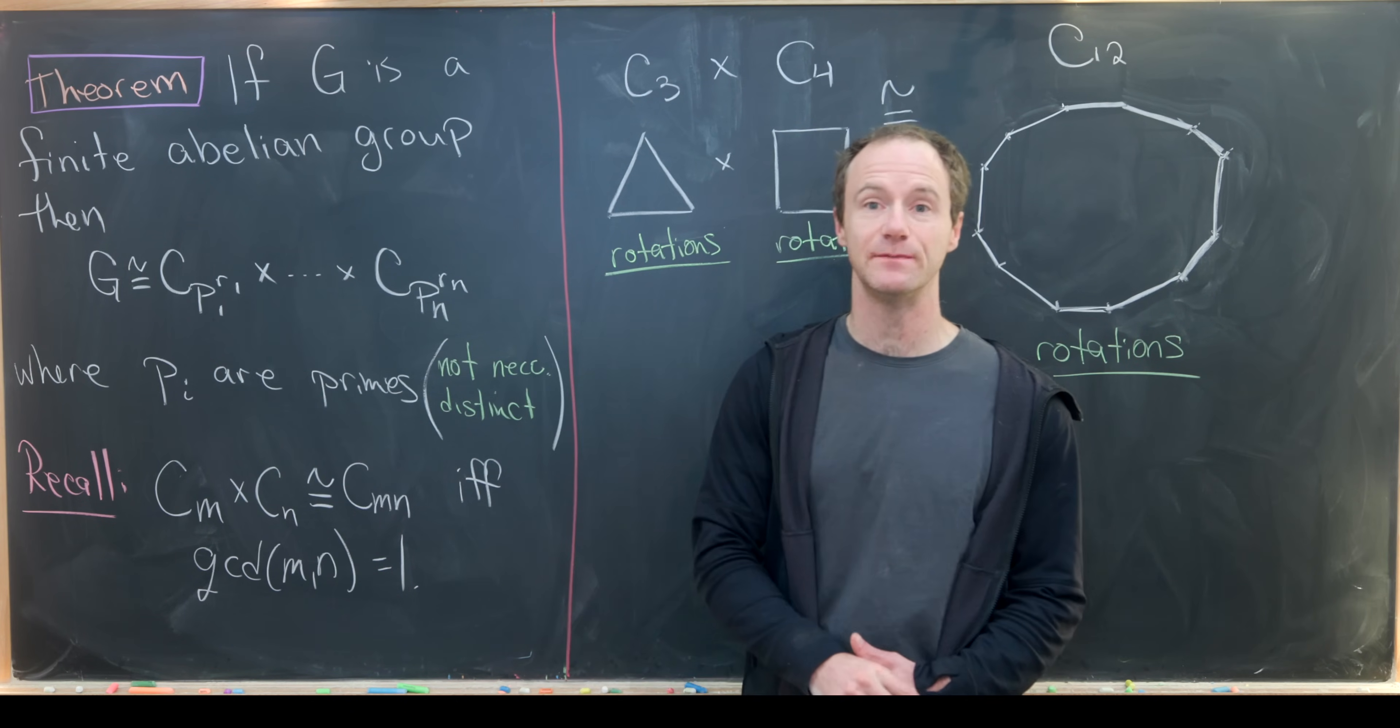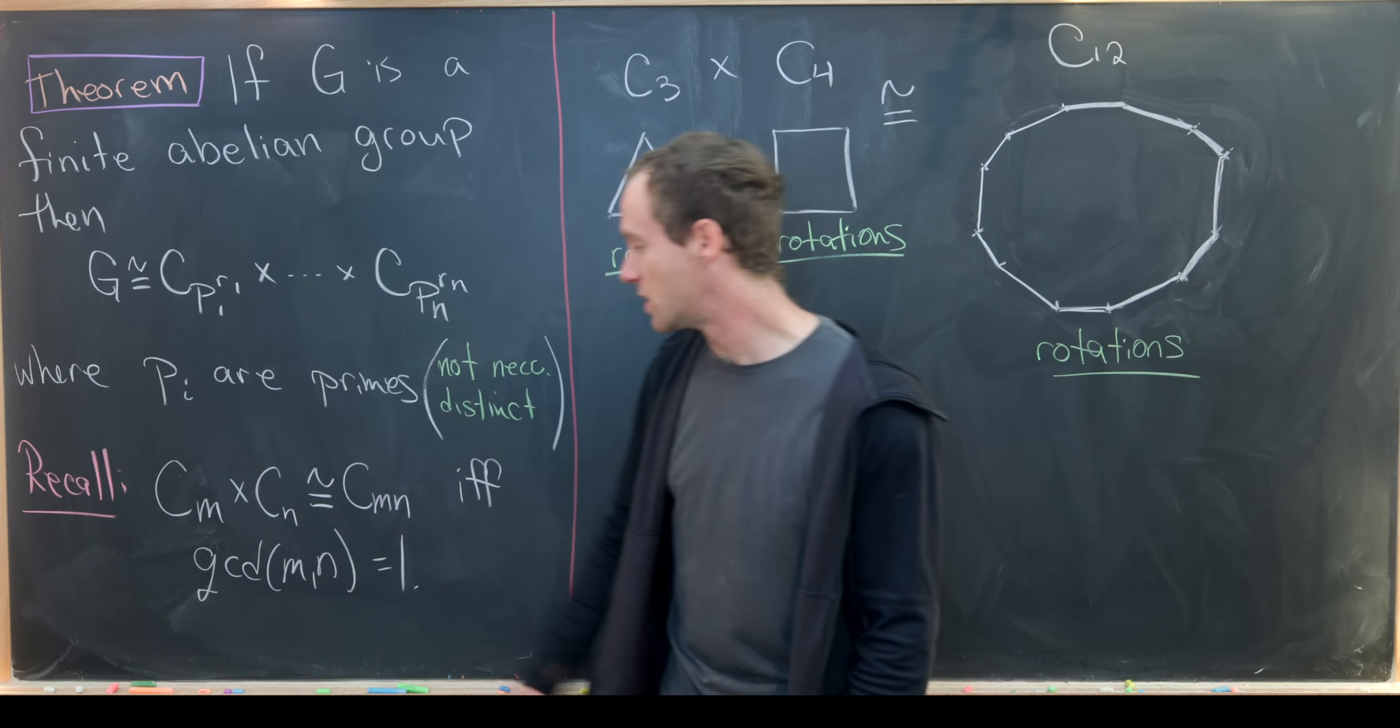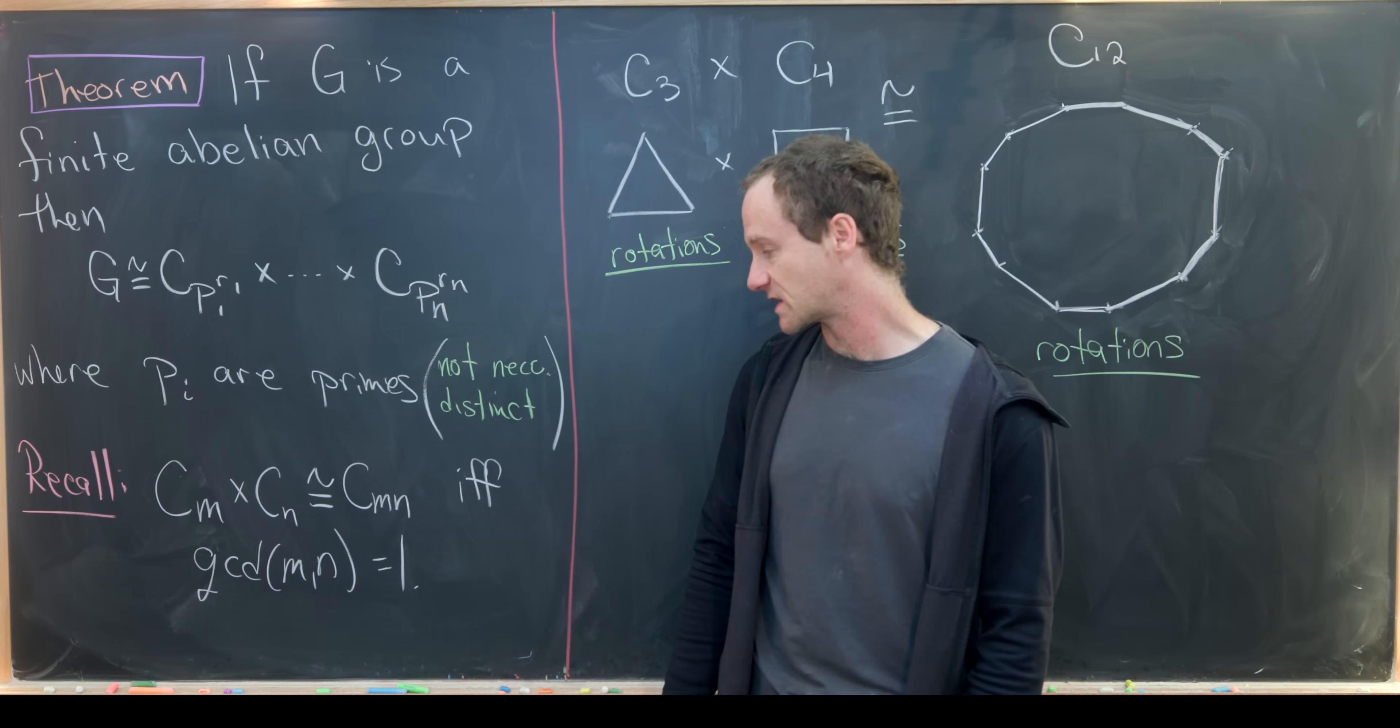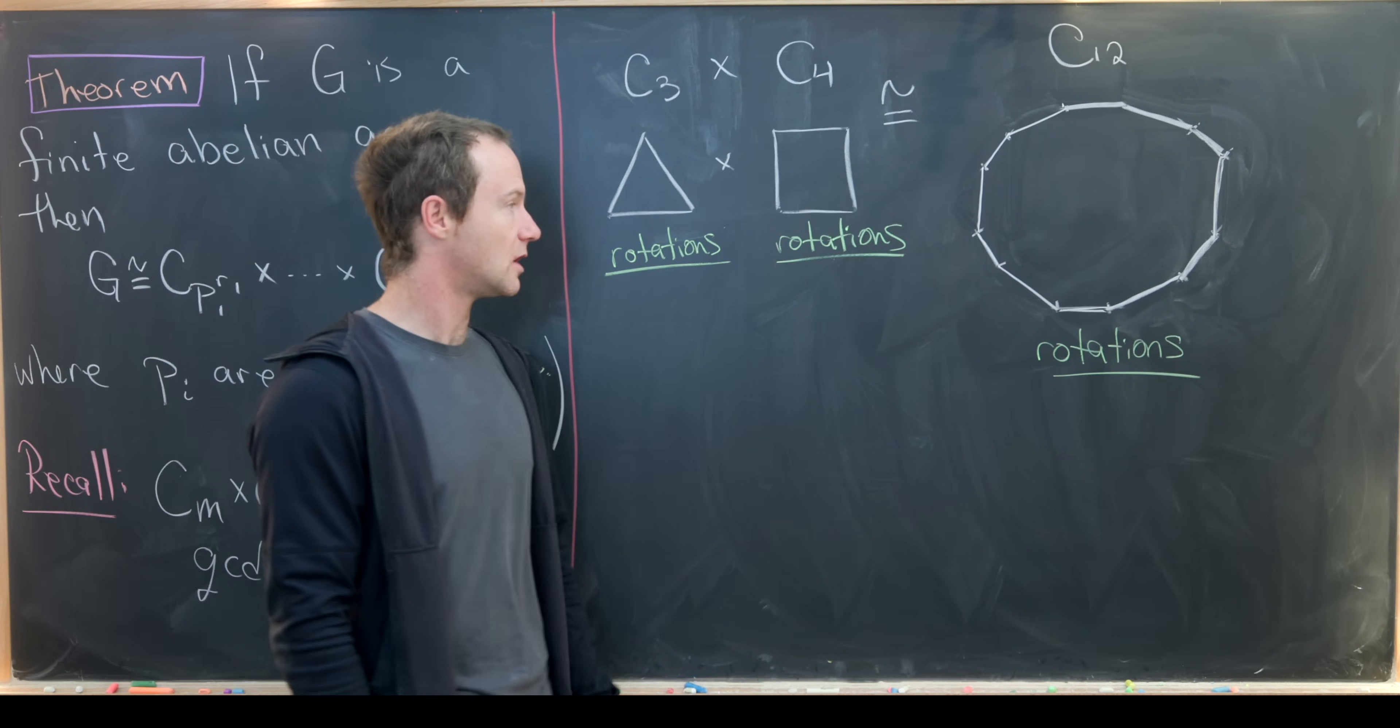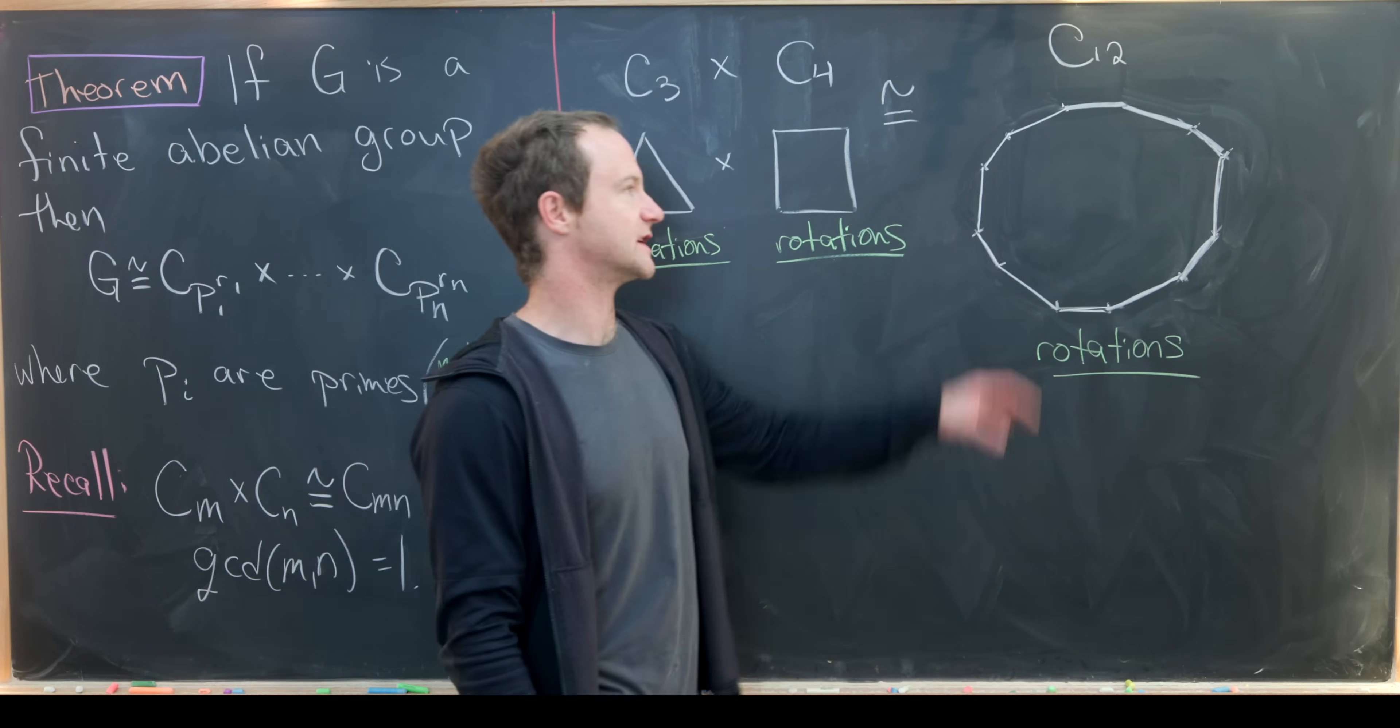All of the P are primes, but they are not necessarily distinct. Now let's recall a classic result that says Cm cross Cn is the same thing as Cmn if and only if m and n are relatively prime. In other words, their greatest common divisor is one. So let's look at a pictorial example. If we take all of the rotations of a triangle and all of the rotations of a square and take their product, then what we'll get is all of the rotations of a 12-gon.